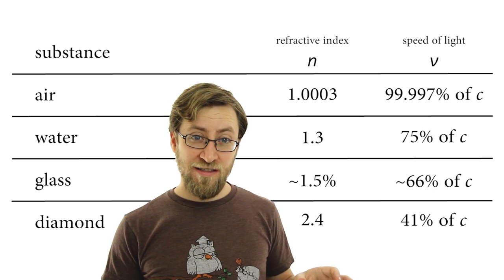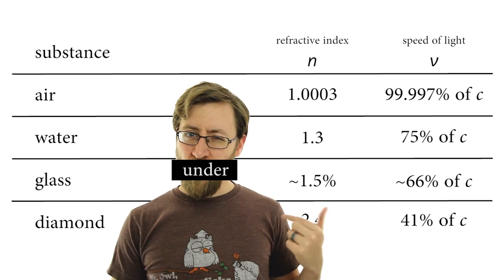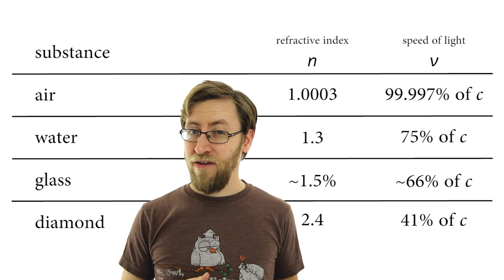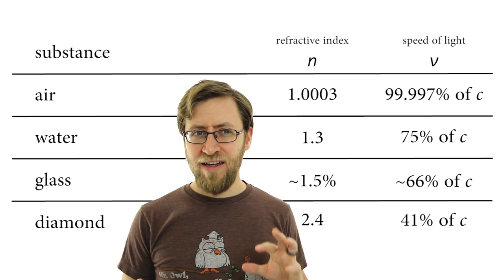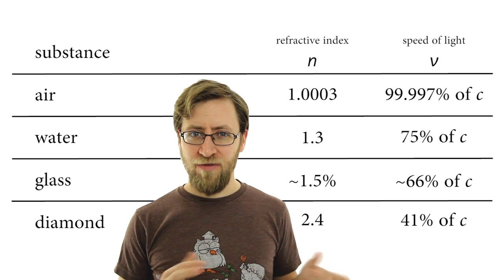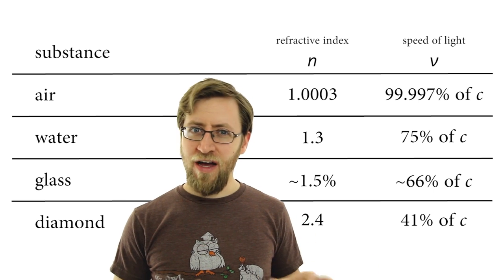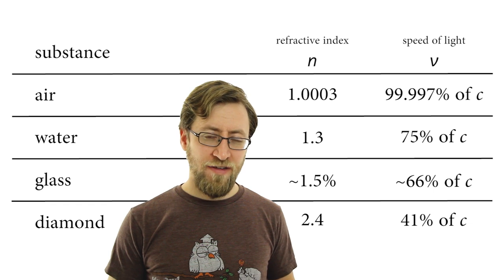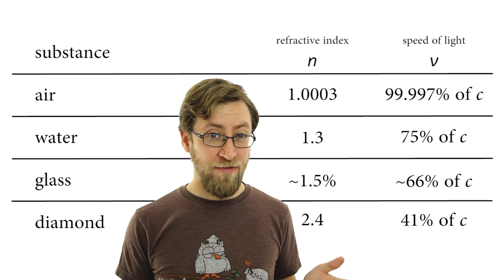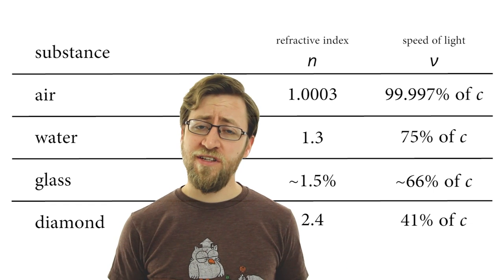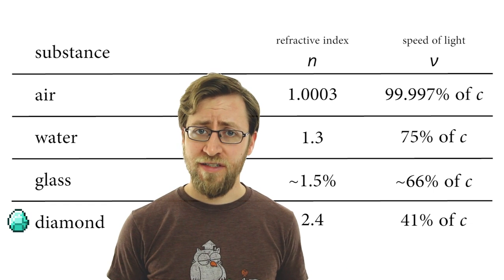Air has a refractive index just a little bit over one. Water has a refractive index just a little bit over one and a third. And glass has a refractive index around one and a half, depending on the type of glass. Usually denser materials have a higher refractive index. So it turns out reflections and refractions get polarized.